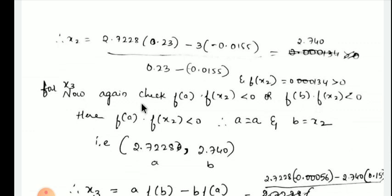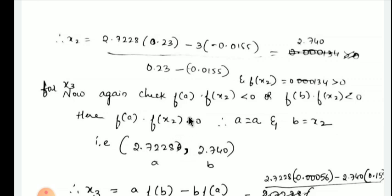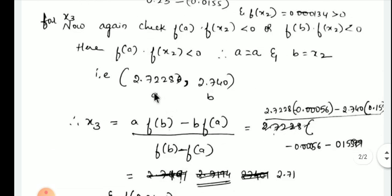For the third iteration, again check whether f(a)·f(x2) is less than 0, or f(b)·f(x2) is less than 0 — using the values from the previous iteration, not x1. Here, f(a)·f(x2) is less than 0, so we take a = a = 2.7228 and b = x2 = 2.740. Find f(a) and f(b), then substitute in the Regula Falsi formula and simplify.